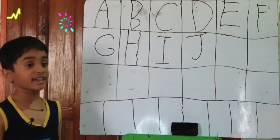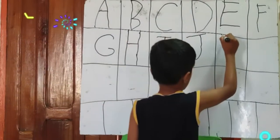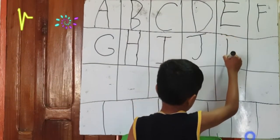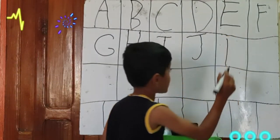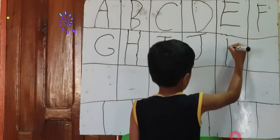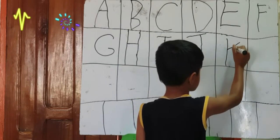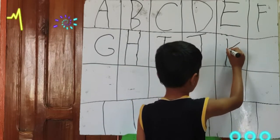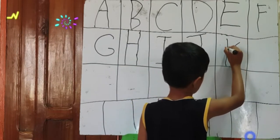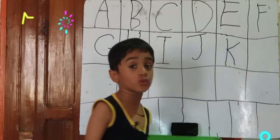Now we are going to learn K. One standing line, one cross up and one cross down.